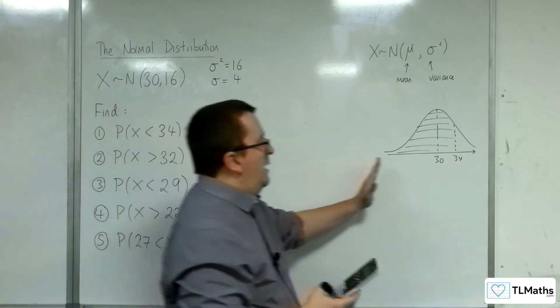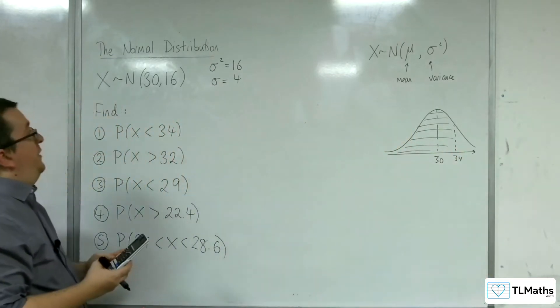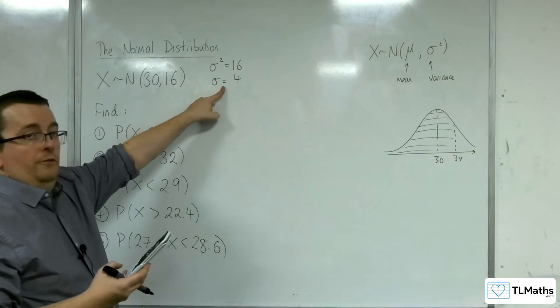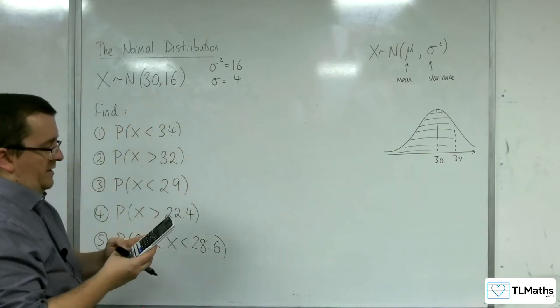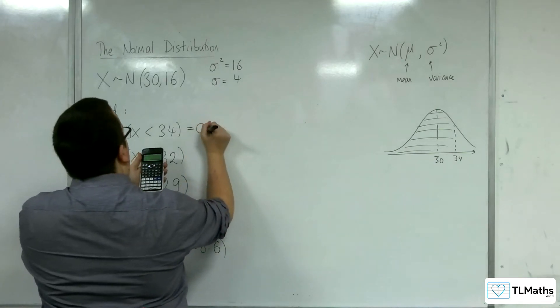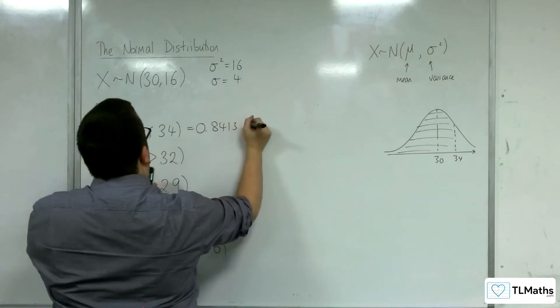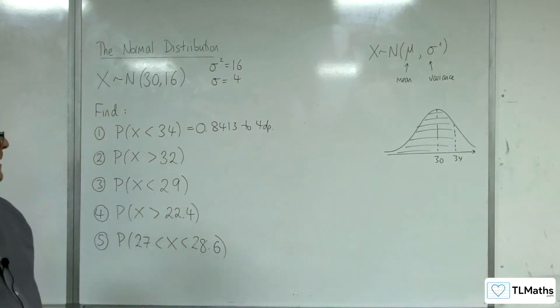The sigma is 4, so the standard deviation, and the mean is 30. And you should just get 0.8413 to 4 decimal places.